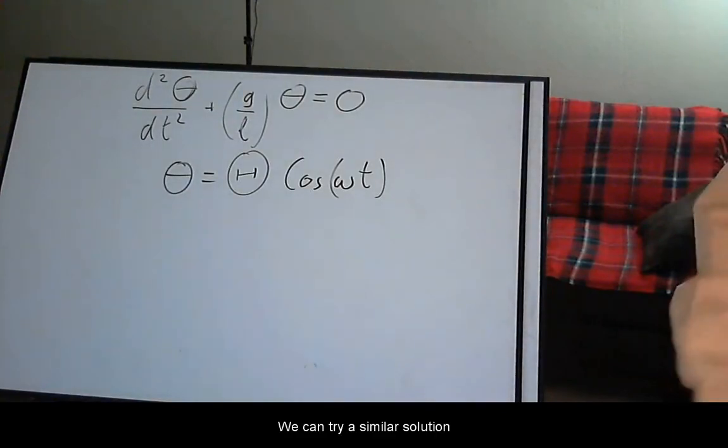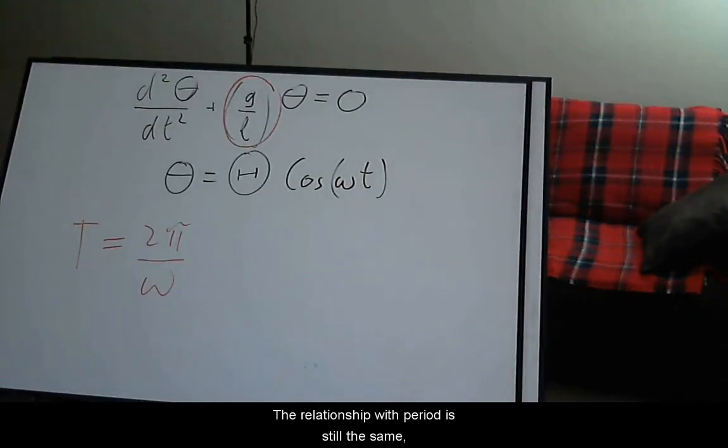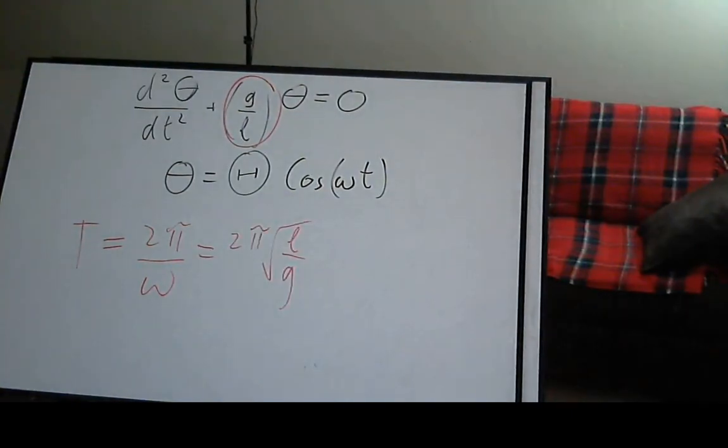We can try a similar solution of the form capital theta times cosine omega t, which stands for angular amplitude. The coefficient next to the angular position will still satisfy omega squared. The relationship with period is still the same. Hence, we can read off the solution.